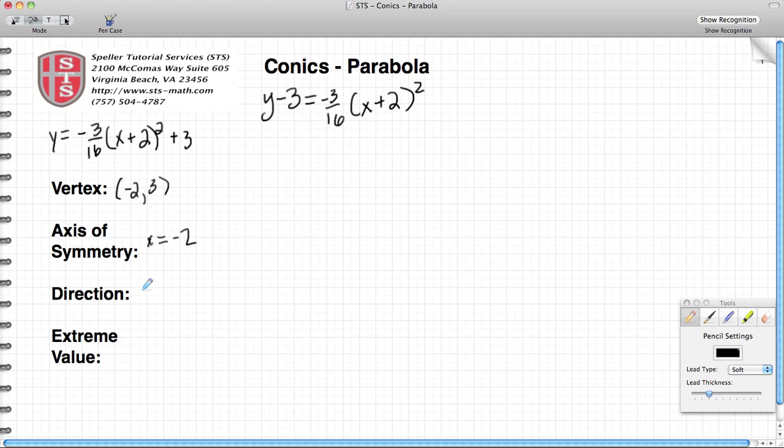Now we're going to go to the direction that this parabola is facing. Again, because the x variable is being squared, the parabola either points up or down. We know that the parabola is going to be pointing in a downward position.